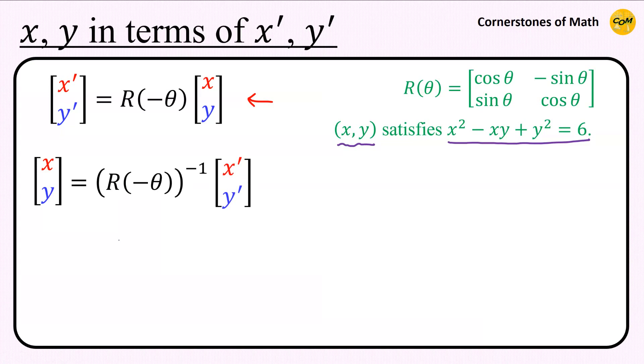So, we need to express vector [x, y] in terms of vector [x prime, y prime]. In that case, vector [x, y] is given as the inverse of the rotation matrix R(minus theta) times vector [x prime, y prime]. And the inverse of the rotation matrix R(minus theta) is simply the rotation matrix R(theta), which makes sense if you think about it geometrically.